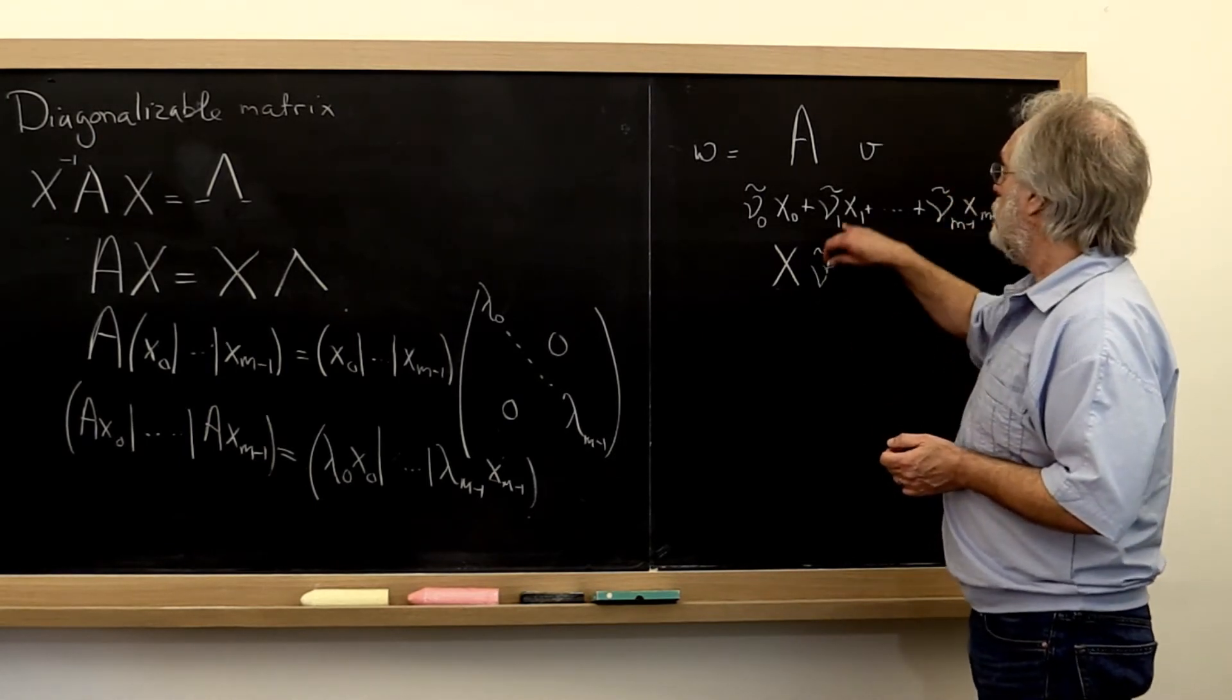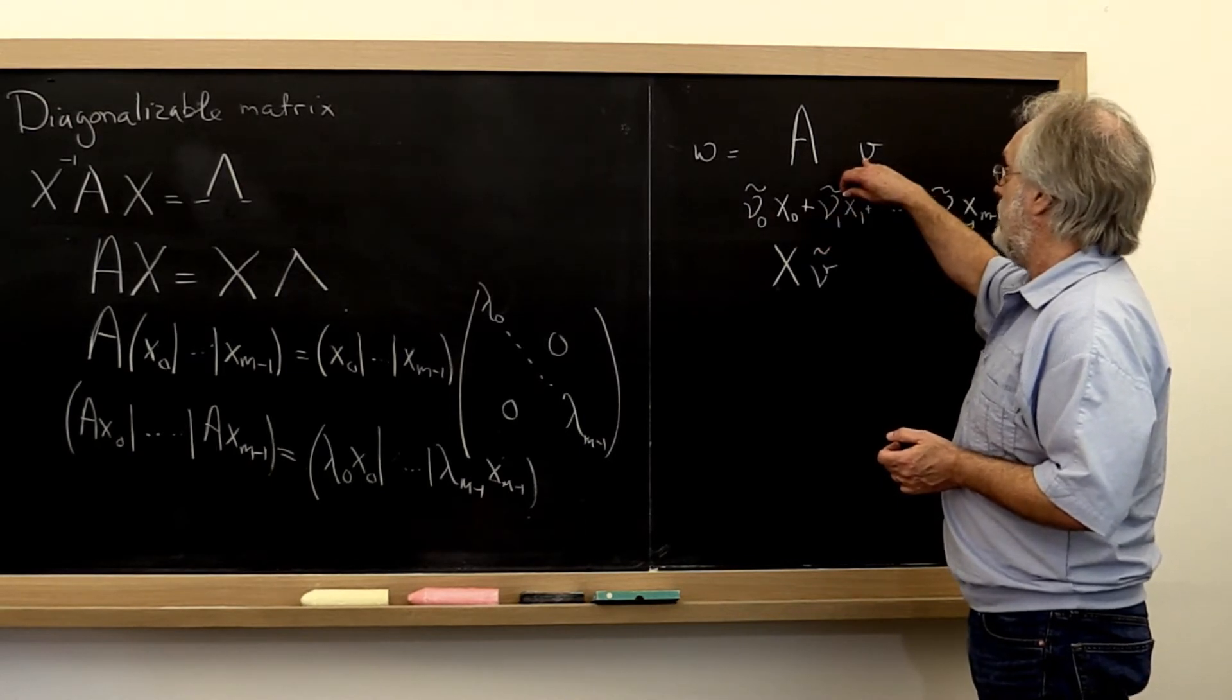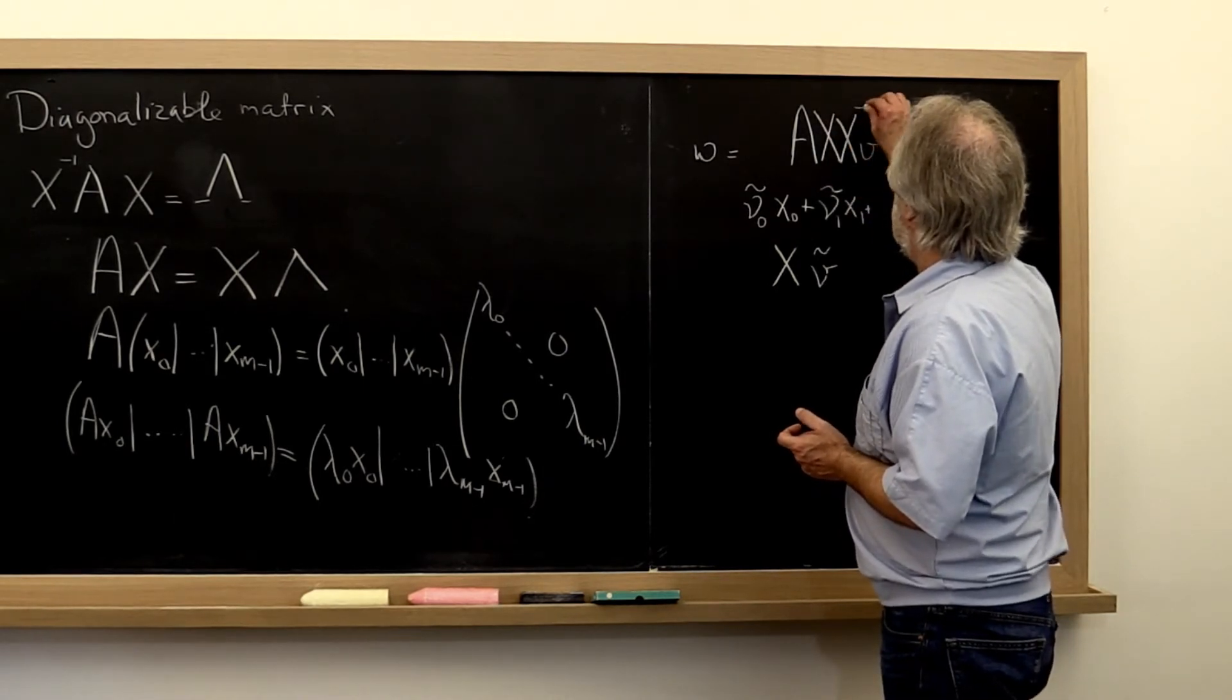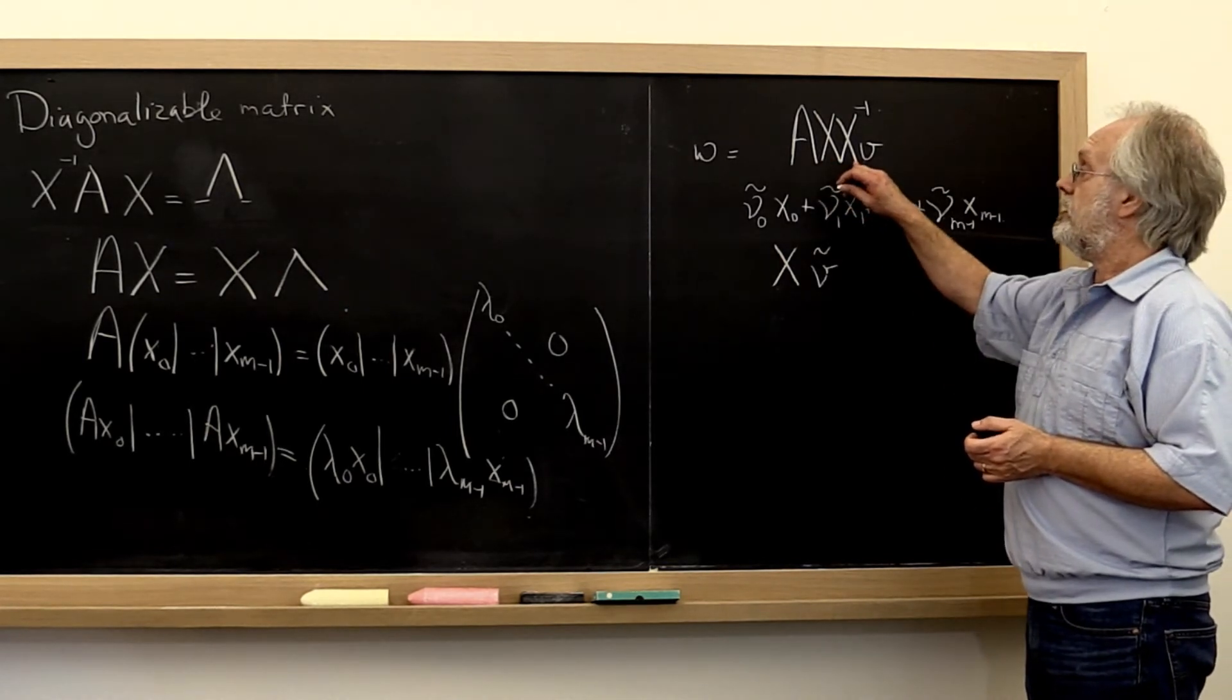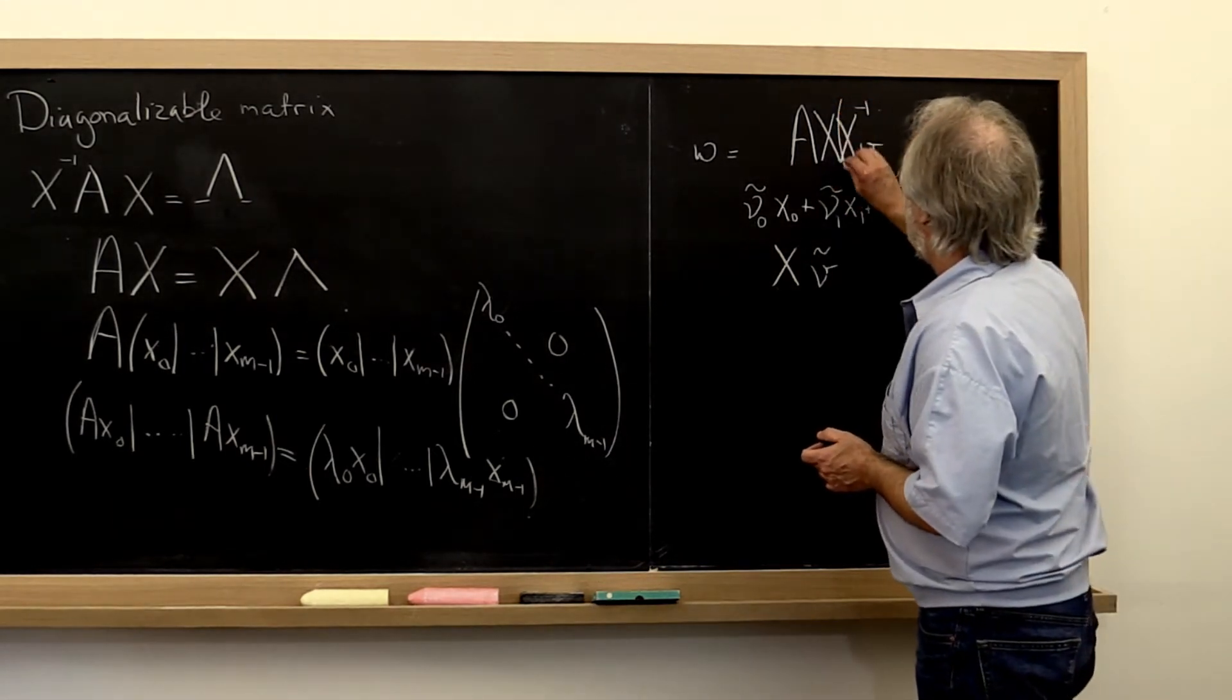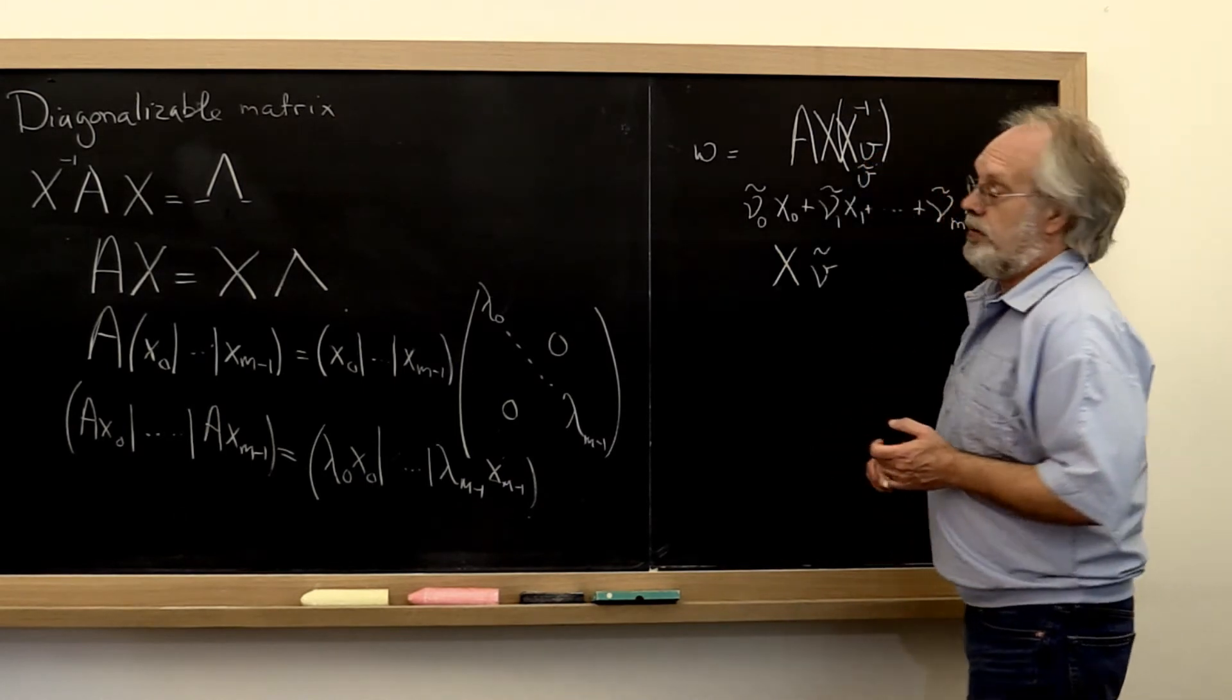Now how do we get these coefficients from our vector v? Well we notice that we can always write an X times X inverse right there. And then all that we have done is insert an identity. So this right here is actually our vector v tilde.